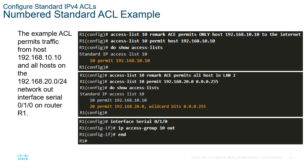Here's an example of an access list. You'll notice it has numbers like 10 and 20 — these are the sequence numbers. This allows us to rank our sequence, and it goes first to last in the order we input them. If we don't input a sequence number, it is assigned for us. Here we have access list 10 with two permit statements, applied to the serial 0/1/0 interface using 'ip access-group 10 out'. As it egresses the interface, the ACL applies to all traffic leaving that interface.